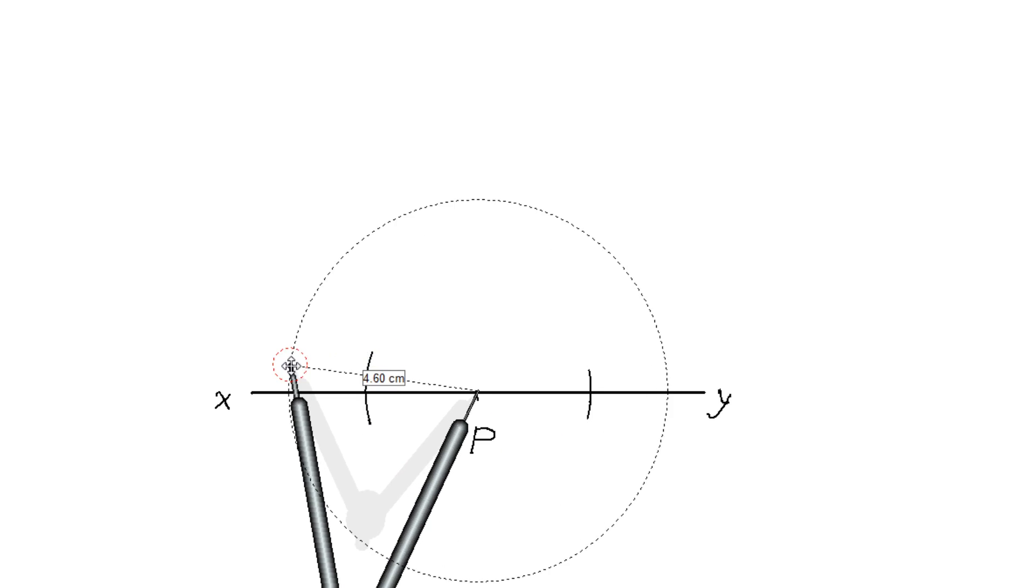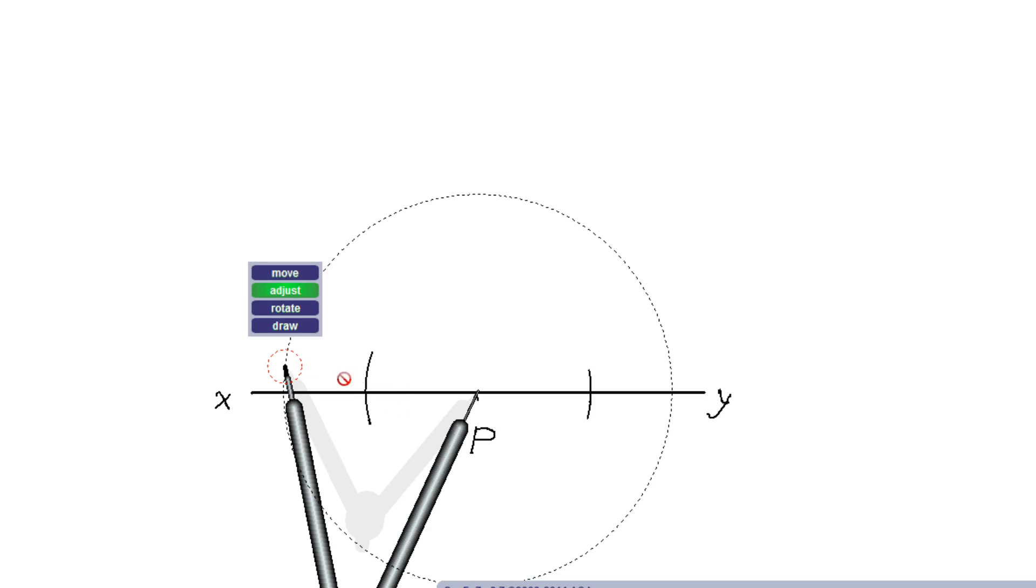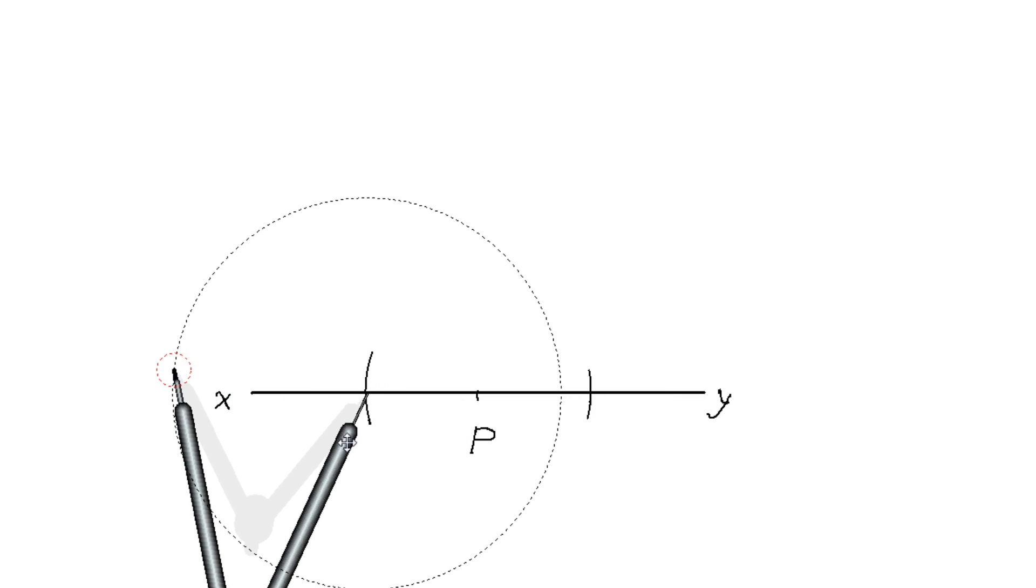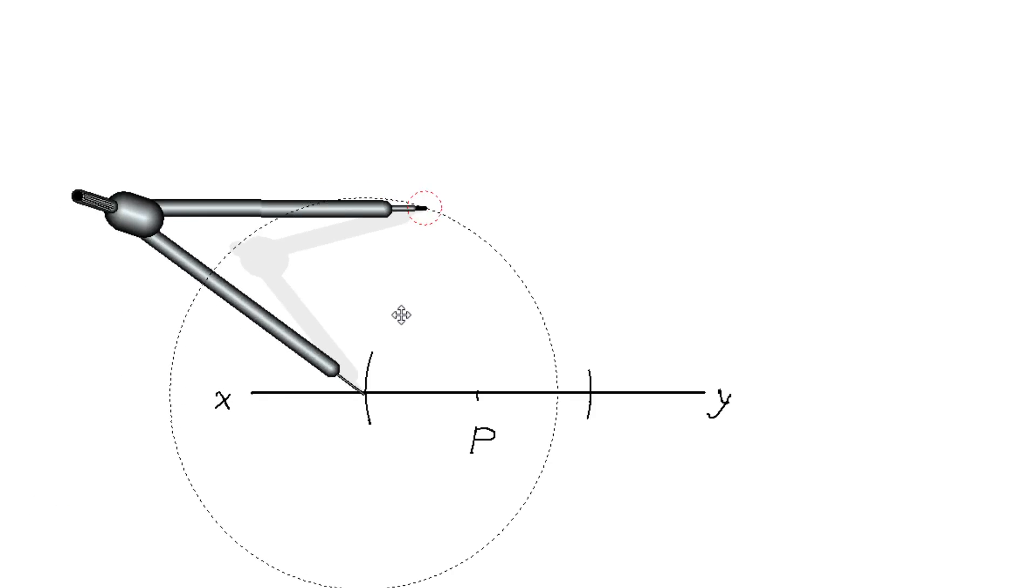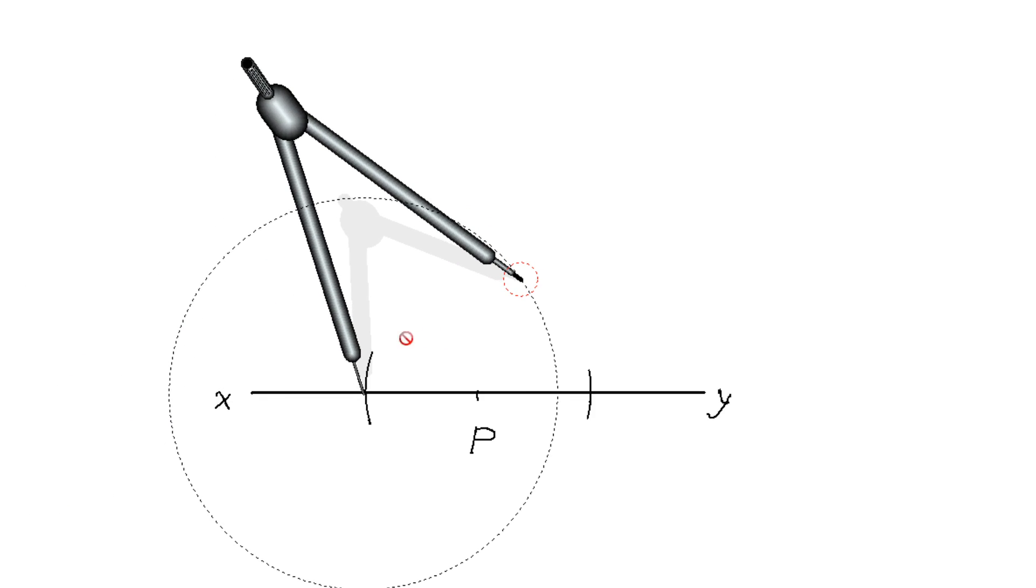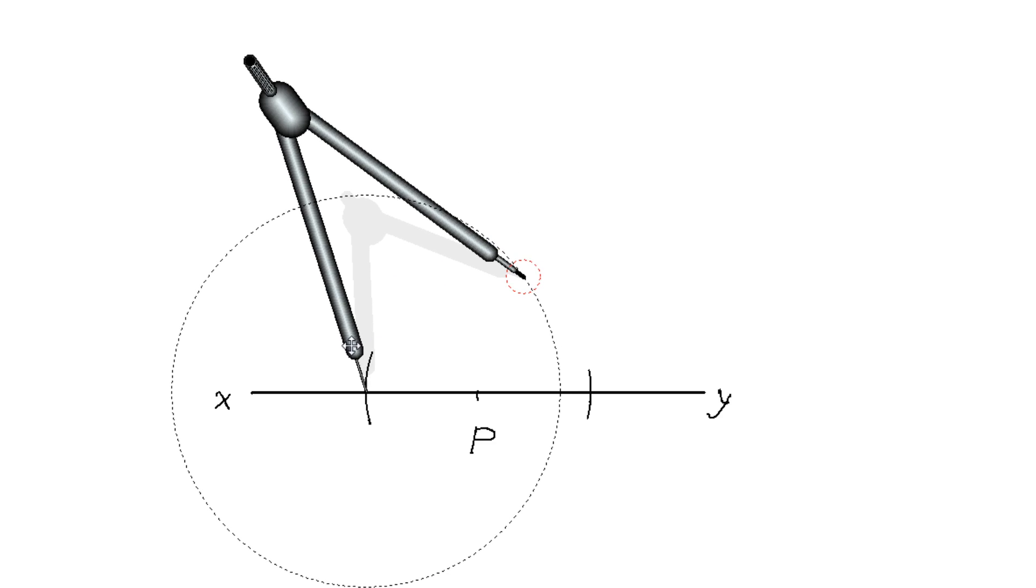Move your compass to point C. At point C, with the same larger radius, let us draw an arc on the same side of line P. Let us adjust it a little bit. So exactly on point C now my compass is positioned.